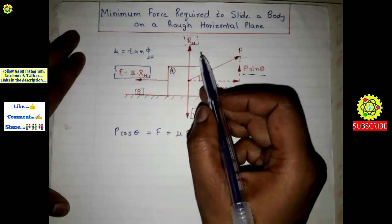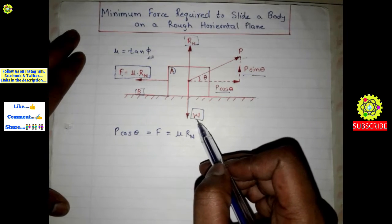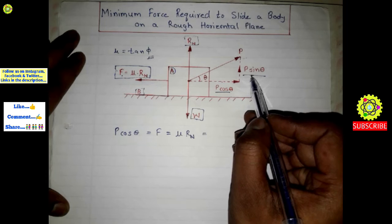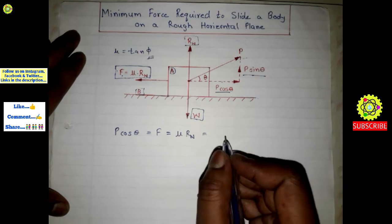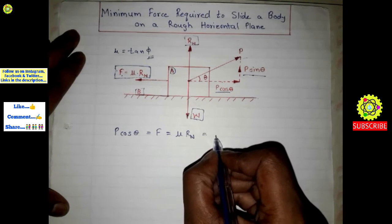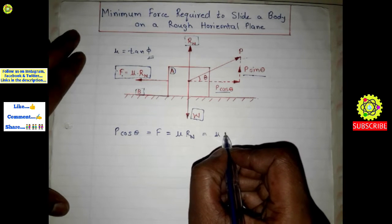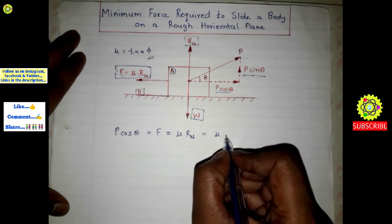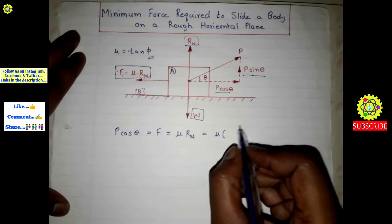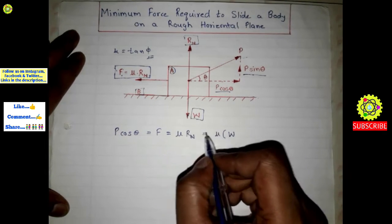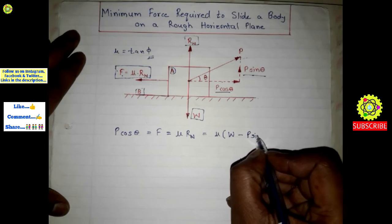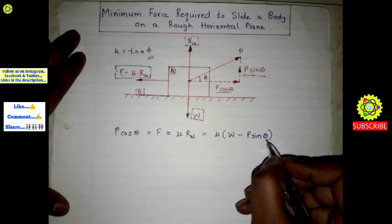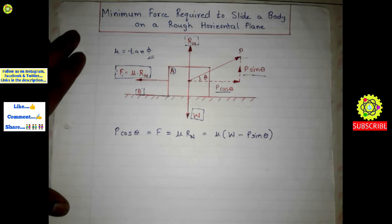Rn acts opposite to the weight, and P sin θ also acts in the vertical direction. When we resolve the vertical forces, we get: Rn is equal to W minus P sin θ, where W is the weight acting downwards.